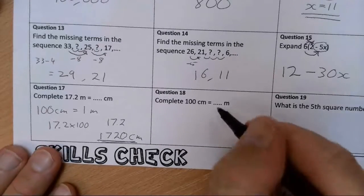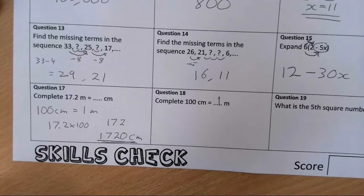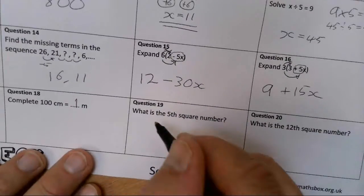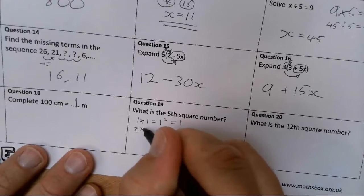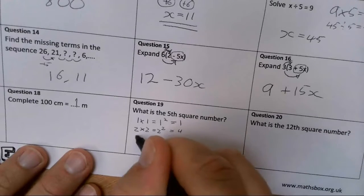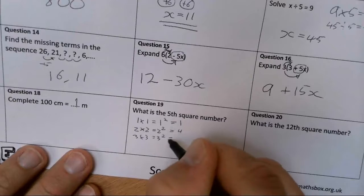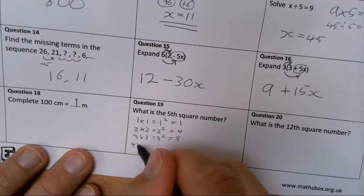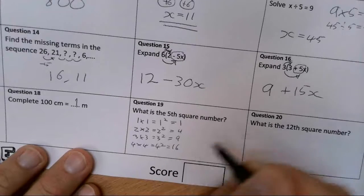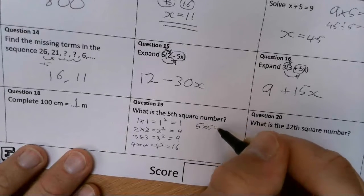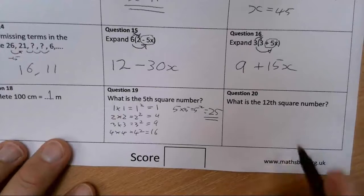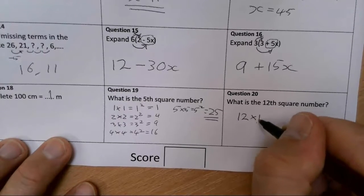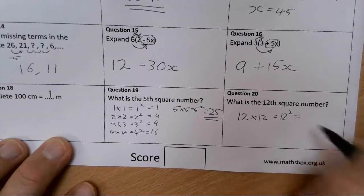100 centimeters equals 1 meter. So that one was much harder than that one. So that's just a fact there. 100 centimeters is 1 meter. The fifth square number... So square numbers are like 1 times 1 is 1 squared, which is 1. 2 times 2 is 2 squared, which is 4. 3 times 3 is 3 squared, which is 9. So fifth square number... Let's just complete this. 4 squared, which is 16. The fifth square number is going to be 5 times 5. That we write as 5 squared, and that is 25. 12th square number is going to be 12 times 12. We would write that as 12 squared. And if you know your 12 times table, you know that's 144.